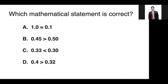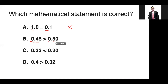Third question: which mathematical statement is correct? Let's identify. First, 1.0 is equal to 0.1 — obviously the ones digits are different, therefore these two are not equal, so this is incorrect. Next, 0.45 is greater than 0.50 — we look at the first digit, it's zero, so we go to the next digit which is 4 and 5. Since 5 is greater than 4, this statement is wrong; it should be less than, not greater than.